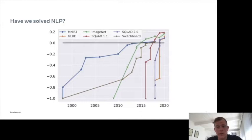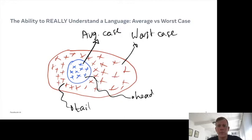If you look at benchmarks in recent years in NLP, you might be fooled into thinking that we have solved NLP. Things like Squad and Glue have been saturated very quickly, especially when you compare this to the long history of benchmarks like MNIST and Switchboard. You might argue that we've solved the average case in the IID setting — the head of the distribution, clean data, that sort of stuff.